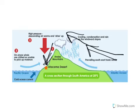The second factor is ocean currents. When the wind does blow in from the ocean, it has to cross the cold ocean currents. As it does, it cools down and any water vapor it's carrying condenses to form fog. As a result, it doesn't rain.